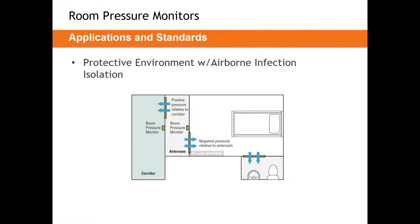You can get creative with these in that most digital pressure monitors can display multiple sensors on one screen, meaning you could locate the room pressure monitor only in the corridor while measuring pressure at two different interfaces. Most facilities will still go with two displays — one at each threshold — so you have a clear indicator as you pass through the interlocking doors.